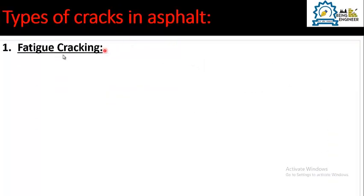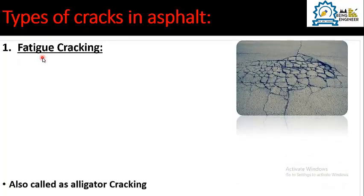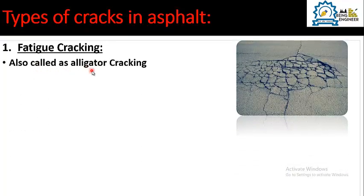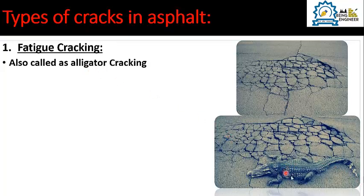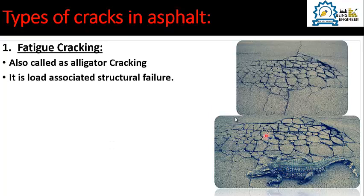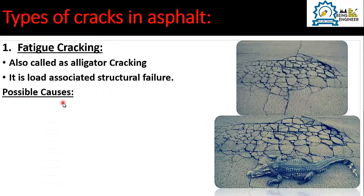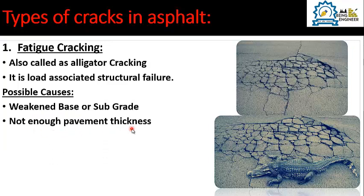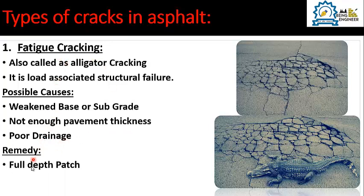The first type of crack in flexible pavements is fatigue cracking, also called alligator cracking because of its resemblance with the shape of an alligator or crocodile. It is a load-associated structural failure caused by excessive load. Possible causes include a weakened base or subgrade, insufficient pavement thickness, and poor drainage. The remedy requires full depth replacement — the pavement must be removed down to subgrade level and the layers relaid one by one.